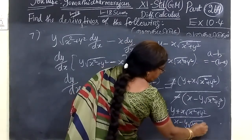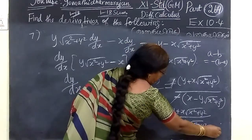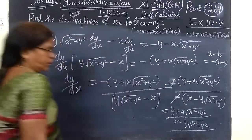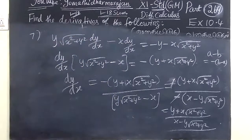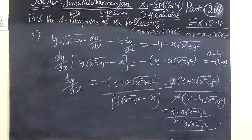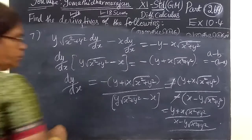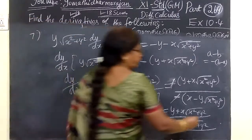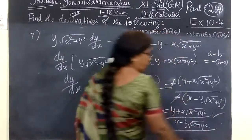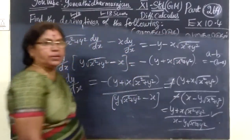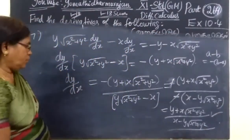s squared plus y squared. So when the answer for this is y plus s, then s minus y. So the answer for this is the correct one.